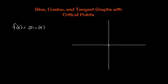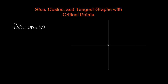So the sine function will start at the origin, travel up, then back down, come back up again, and the period ends. This is the amount of time it takes to make one revolution. There are four critical points, and these critical points are labeled as follows. The first critical point is zero, and the last point of the period is 2π.